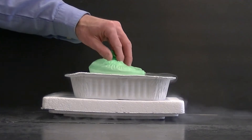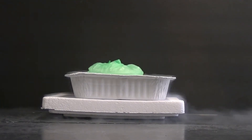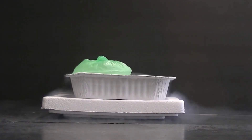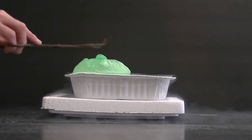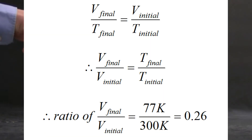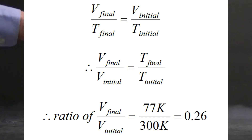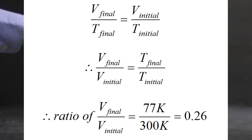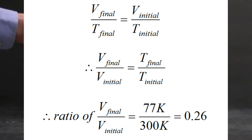Now I think it's instructive to use Charles' Law to predict how much this balloon would be expected to shrink if it behaved ideally. So if we start with a gas at room temperature — that's 300 Kelvin — and it gets cooled to the temperature of liquid nitrogen, which is 77 Kelvin, you do a calculation and you'll find that the balloon should shrink to about roughly one-fourth of its original size.